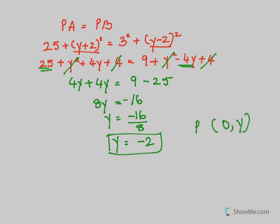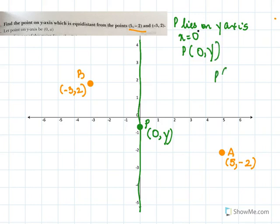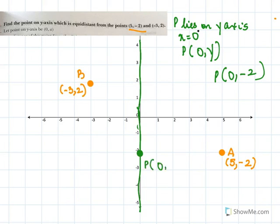Remember point P was taken as (0, y). We found y = -2, so P is (0, -2). Let's go back to our diagram: 0, -2 is here. This is point P at (0, -2), and we can see that this distance PA and this distance PB are equal.